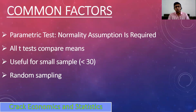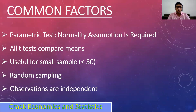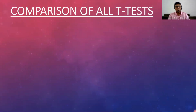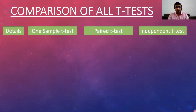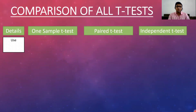Additional common factors are random sampling — we collect data randomly — and all observations are independent of each other. Now let's understand the comparison of all T-tests. We have one sample T-test, paired T-test, and independent T-test, and we will talk about the use of each.